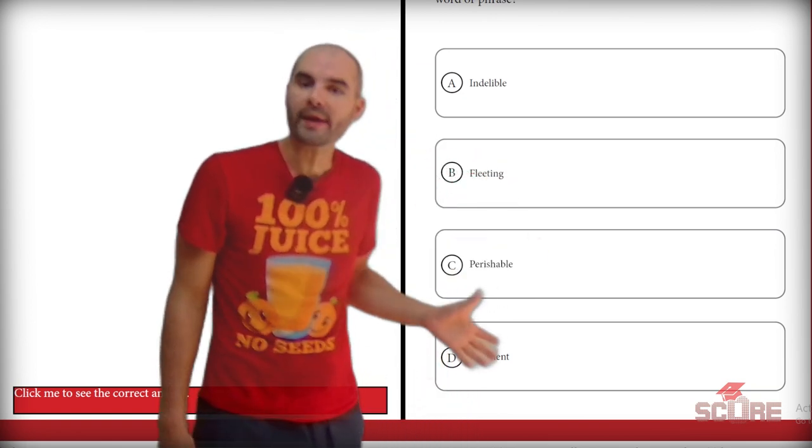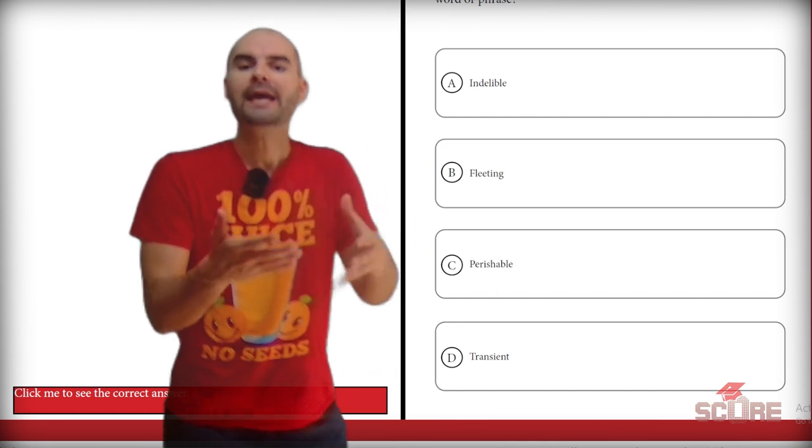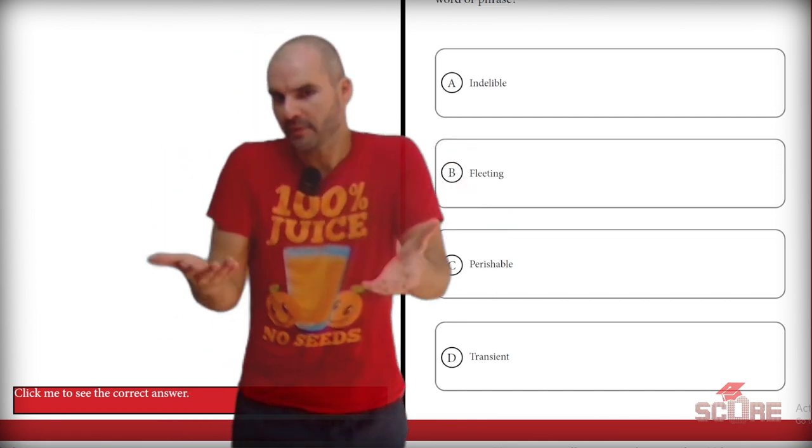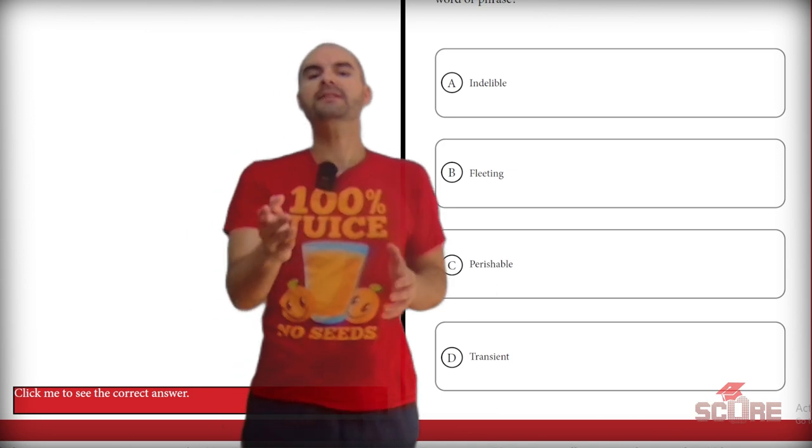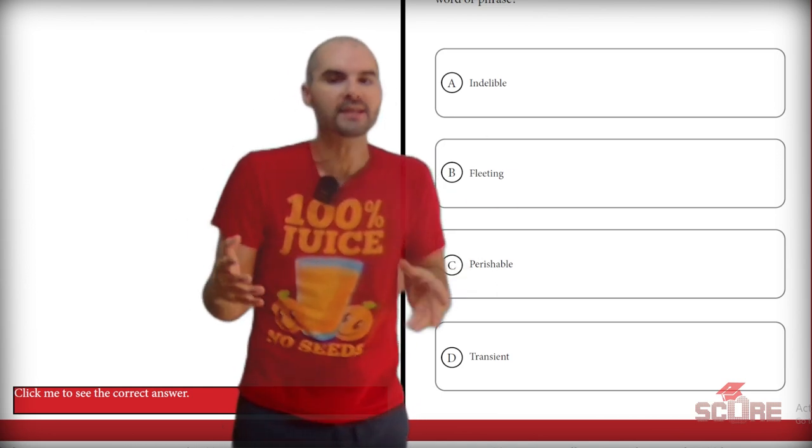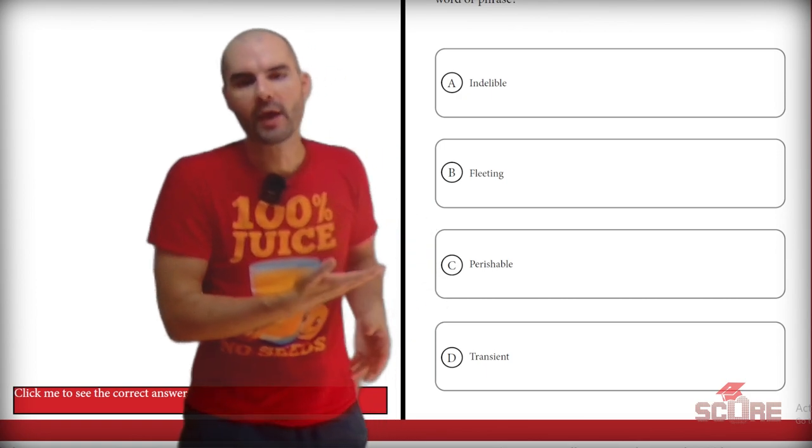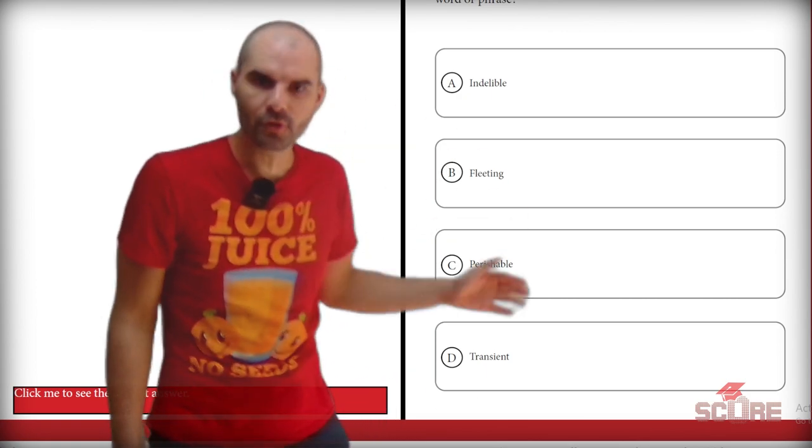Fleeting, perishable, and transient all imply that something is temporary, while indelible means that something is not temporary. It's something that lasts a long time. And so just because that one word is the only one that doesn't have that temporary meaning, I know A is the right answer. Mark it. Move on.